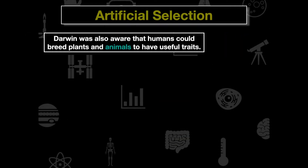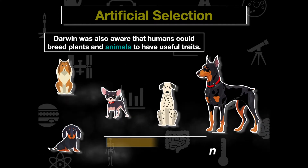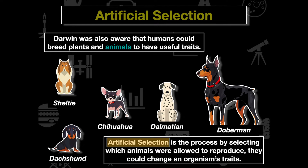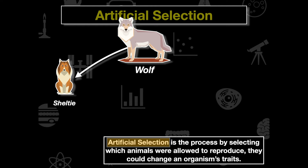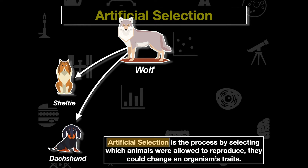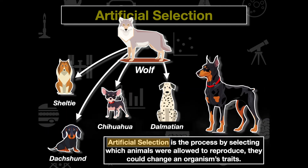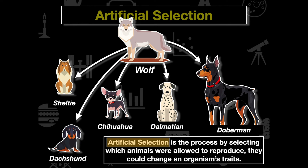One more topic in this video: artificial selection. Darwin was aware that humans could breed plants and animals to have useful traits. Artificial selection is the process of selecting which animals are allowed to reproduce, influenced by humans. For example, all dogs are common descendants of the wolf. Wolves and dogs at some point in Siberia speciated and separated, giving us all the individual dog breeds we see today — Shelties, Dachshunds, Chihuahuas, Dalmatians, Rottweilers, Dobermans — each with very different morphological characteristics, each bred for a specific purpose.